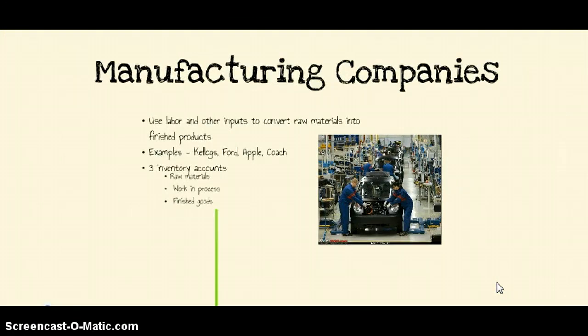The third type of company is a manufacturing company. These companies use labor and other inputs such as electricity and water to convert raw materials into finished products. Examples include Kellogg's, Ford, Apple, and Coach — all manufacturing companies.